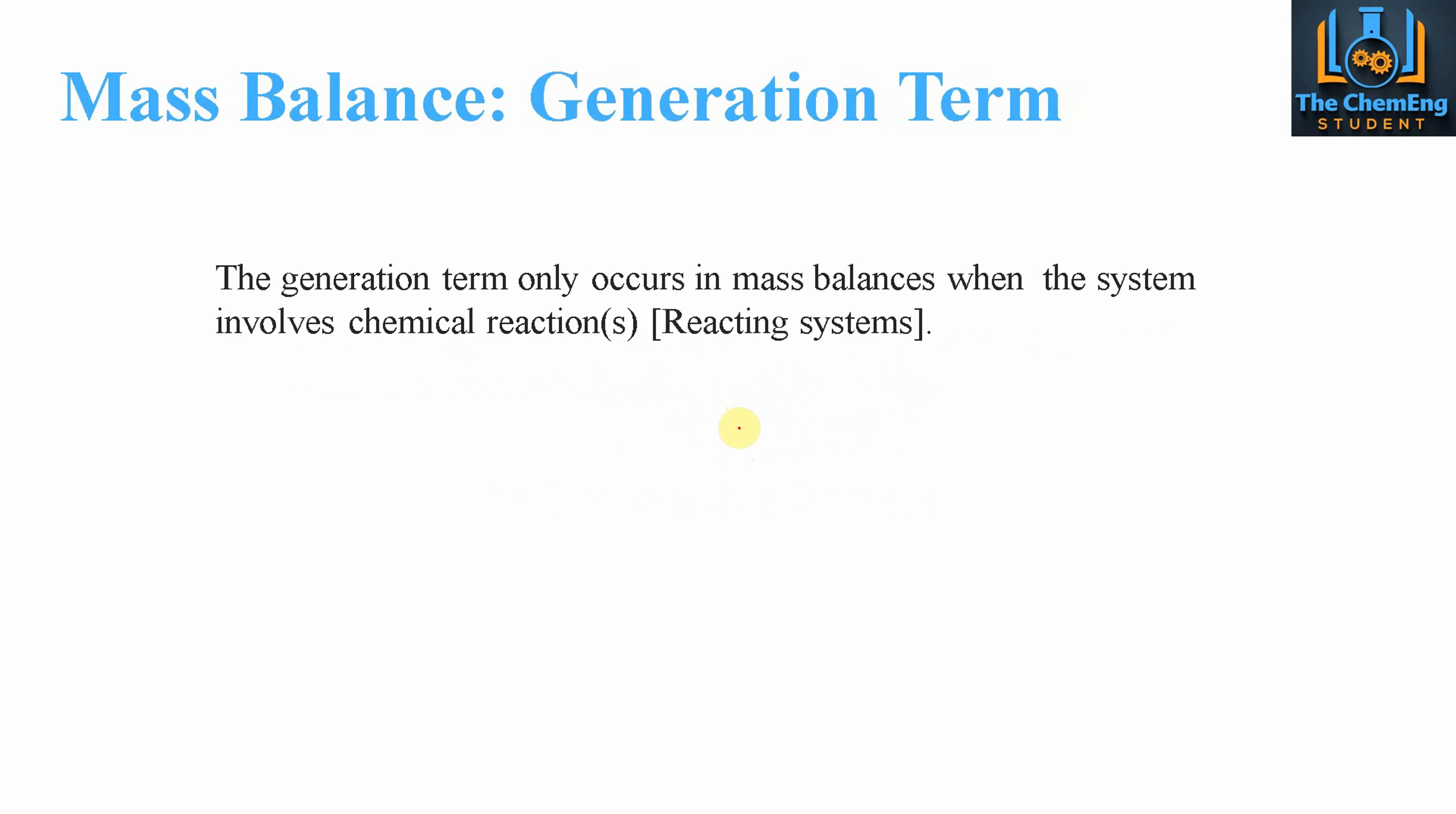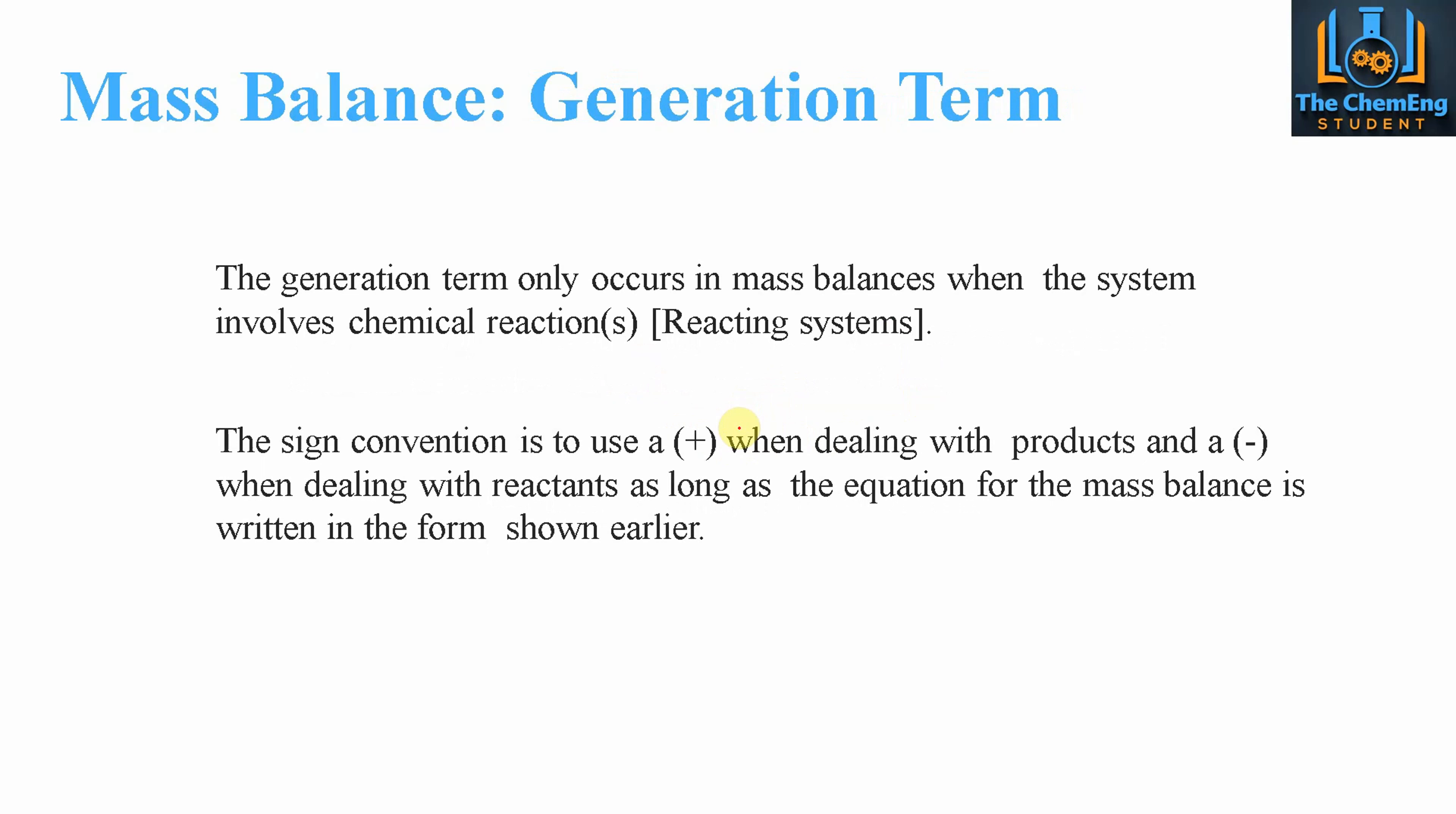Now the generation term will only occur in mass balances when a reaction is involved, i.e., reacting systems. Now the sign convention here is, we've seen that there was a plus and a minus at the generation term in the general balance. Now the plus is when we deal with products, and the negative is when we deal with reactants.